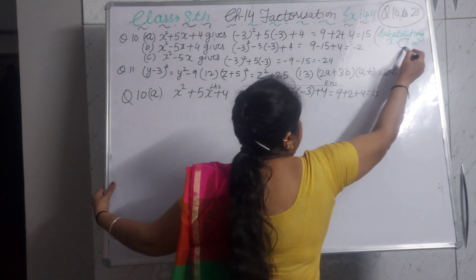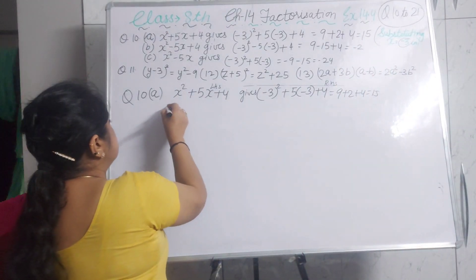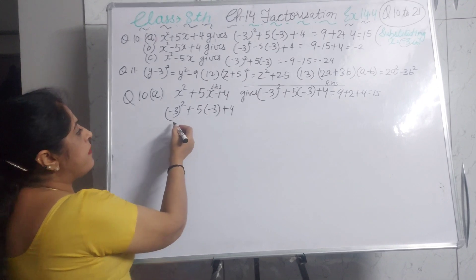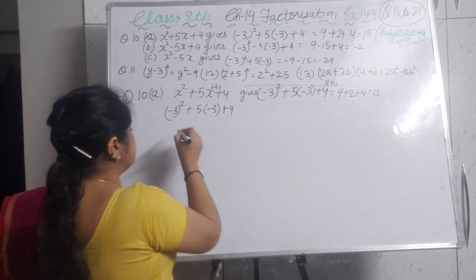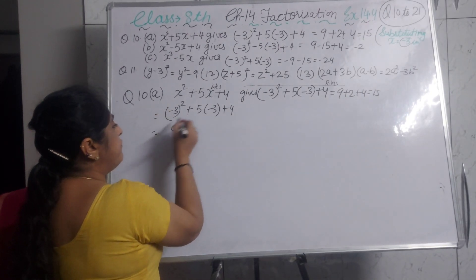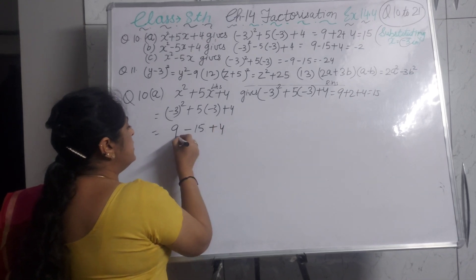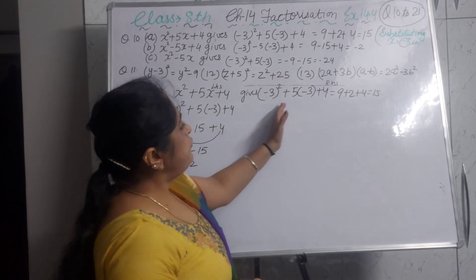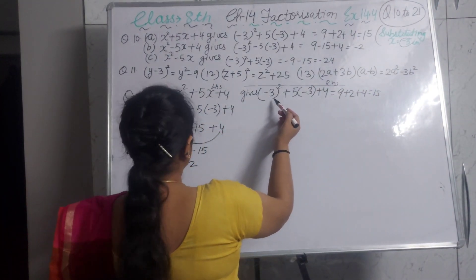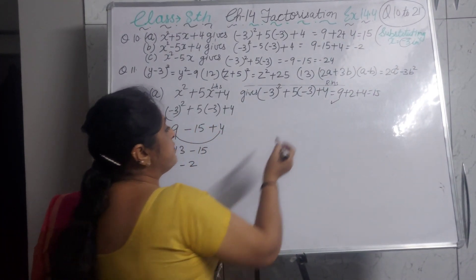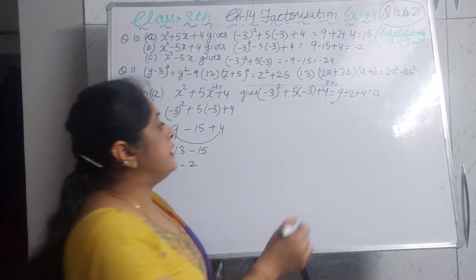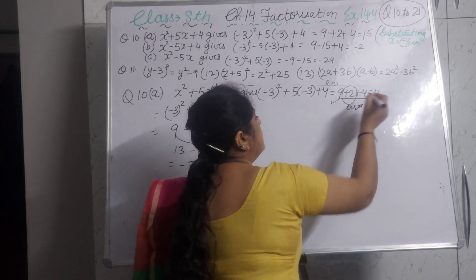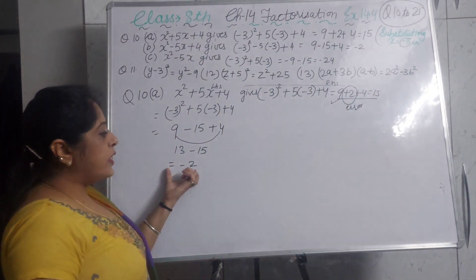We will now solve the left hand side by substituting x = minus 3: (minus 3)² + 5×(minus 3) + 4 = 9 minus 15 plus 4. Adding the positive numbers 9 and 4 gives 13, then 13 minus 15 = minus 2. The correct answer is minus 2, not 15. The error is that they wrote 5 minus 3 as plus 2 instead of minus 15.